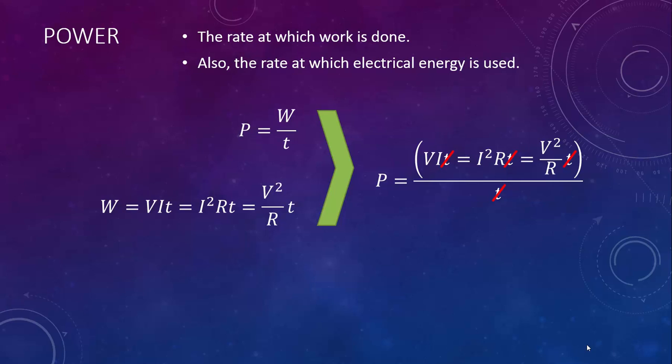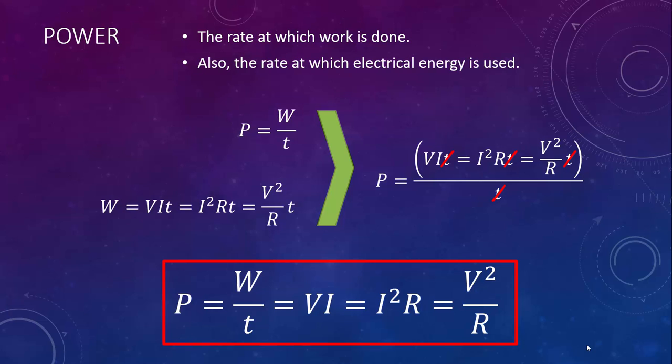All those t's cancel out and we're left with the equation p equals w over t equals vi equals i squared r equals v squared over r. And again, this is on your reference tables.